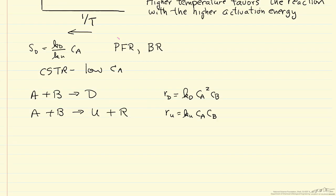Let's look at these two parallel reactions, where now we have two reactants, and the first reaction is second order in A and first order in B. The undesired reaction is first order in A and first order in B.